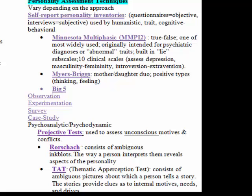The Myers-Briggs is also a personality inventory, created by a mother-daughter duo. It was designed to show results in positive types so nobody really felt bad about themselves — it's kind of a warm, fuzzy inventory. Examples of types include a thinking type or a feeling type. The Big Five is another example of a personality inventory. All of these are mainly used by the trait perspective. Their benefits are that they're reliable and scientifically testable, but a weakness is that they only explore a limited number of traits.